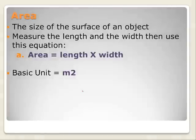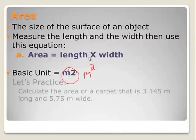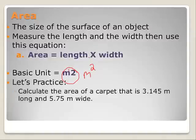Area is the size of the surface of an object. You measure the length and the width, then use the equation. Area is not something you can measure directly; it's a calculation. When you take a meter times a meter, you get a meter squared. This should actually be a superscript. Go ahead and pause the video, try this practice problem, and when you come back, we'll have our answer.